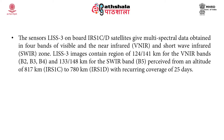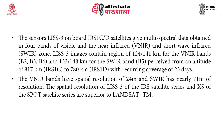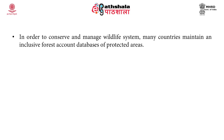LISS-3 images cover a region of almost 124 to 141 kilometers for the very near-infrared bands and about 133 to 148 kilometers for the short-wave infrared bands, perceived from an altitude of about 817 kilometers in IRS-1C to 780 kilometers in IRS-1D, with a revisit coverage of 25 days. The near-infrared bands have a spatial resolution of 24 meters and short-wave infrared has nearly 71 meters of resolution. The spatial resolution of LISS-3 of the IRS satellite series and multispectral data are superior to Landsat thematic mappers.